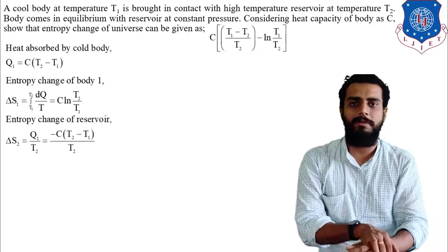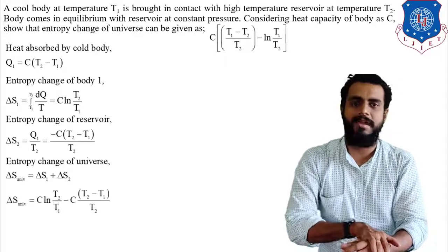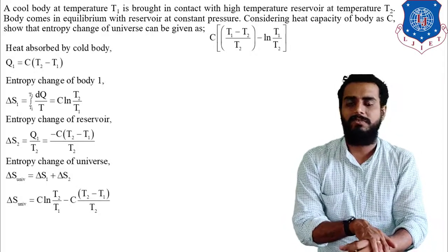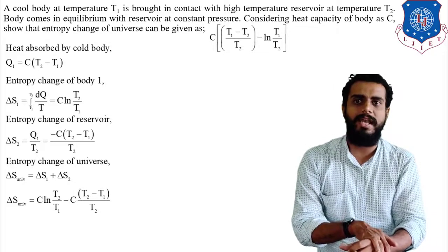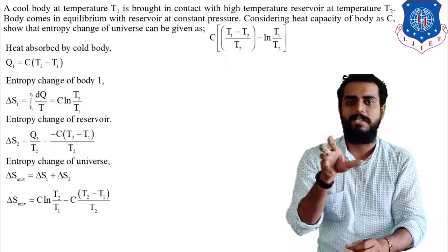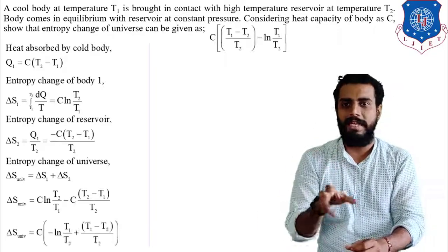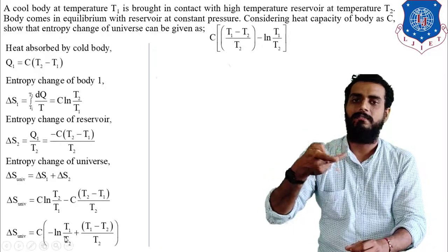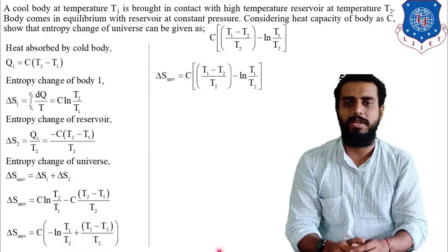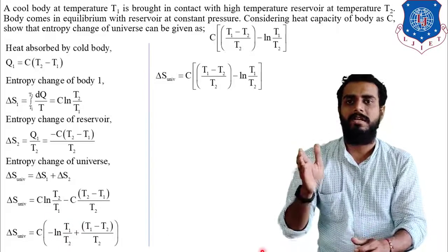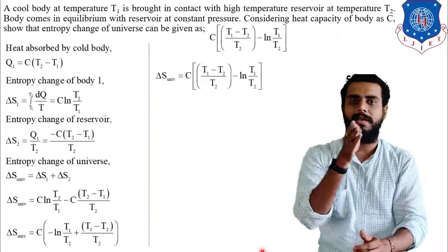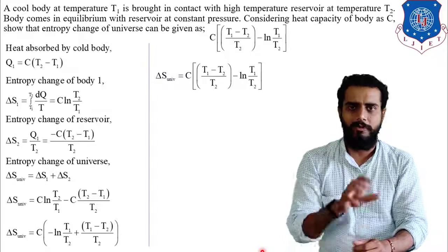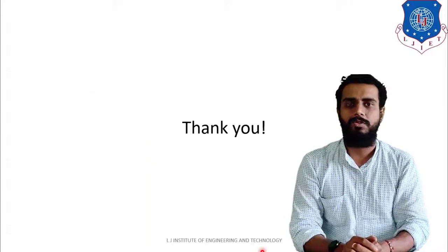The entropy change of the universe is ΔS_universe = ΔS1 + ΔS2. Substituting and rearranging, the final result is ΔS_universe = c·[(T1 − T2)/T2 − ln(T1/T2)]. Today we will keep up to this point. Thank you.